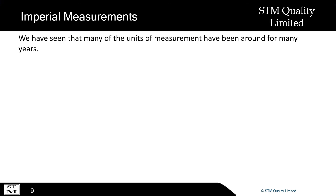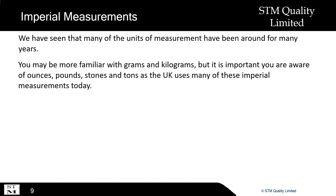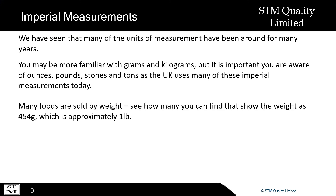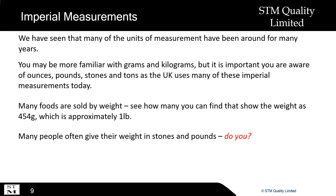We have seen that many of the units of measurement have been around for many years. You may be more familiar with grams and kilograms, but it is important you are aware of ounces, pounds, stones and tons as the UK uses many of these imperial measurements today. Many foods are sold by weight — see how many you can find that show the weight as 454 grams, which is approximately one pound. Many people often give their weight in stones and pounds.